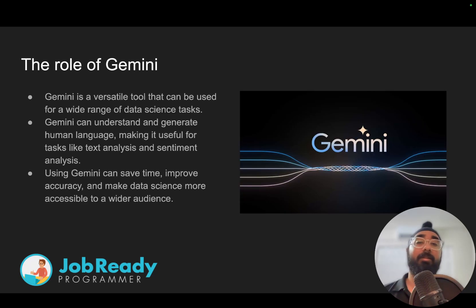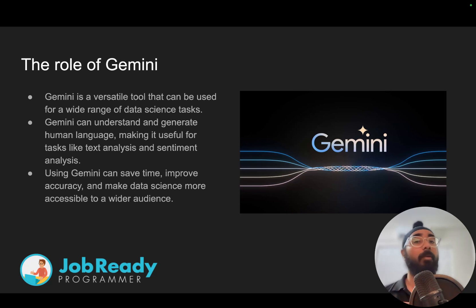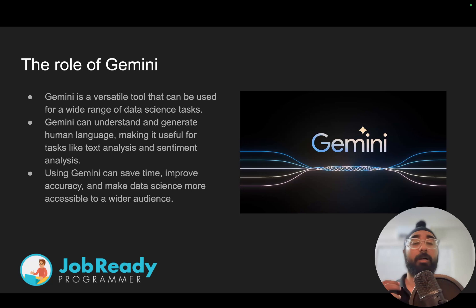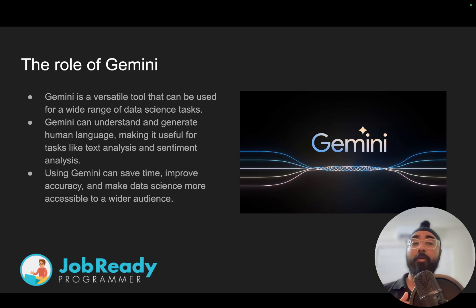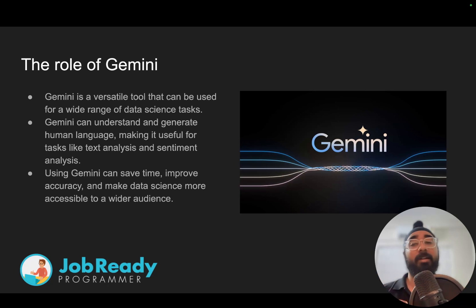So now let's see where Gemini fits into this narrative. Gemini is a versatile tool that can be used for a wide range of data science tasks. We won't go into a lot of detail here, because the aim of this course is not to teach you about data science or even LLMs — the aim is to show you how we can use Gemini to our full advantage. Gemini can understand and generate human language like it can understand you like any other person, and according to your input, it can react and generate content which is humanly readable. This makes it useful for tasks like text analysis and sentiment analysis, and you can even use it to analyze images, videos, and audios.